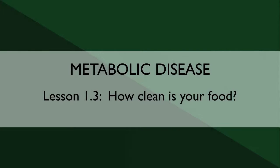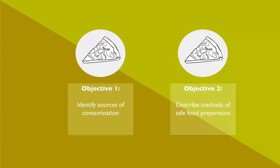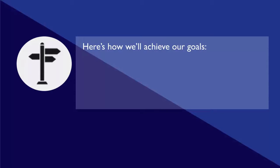Lesson 1.3: How clean is your food? The goals of this lesson are to demonstrate how outbreaks of foodborne illness can occur and to teach basic food safety procedures. Students should be able to identify sources of contamination and describe methods of safe food preparation. We'll achieve these goals by having a jigsaw and teach back of foodborne illnesses.